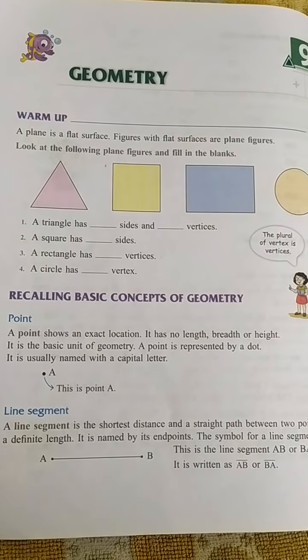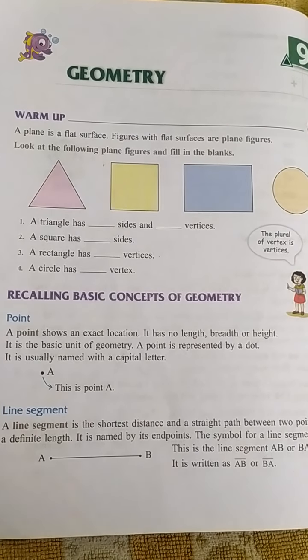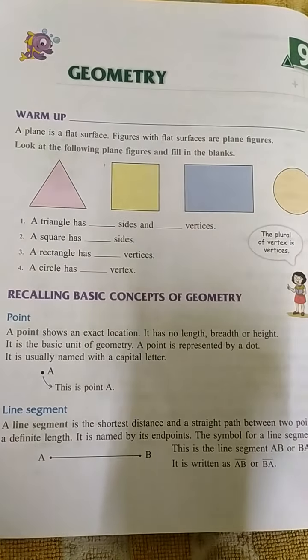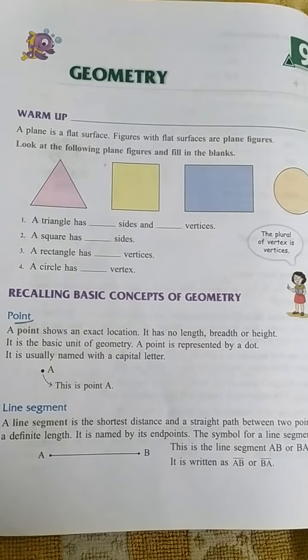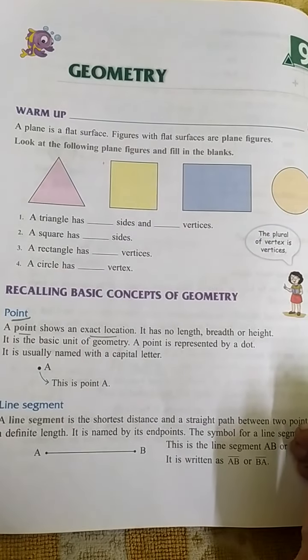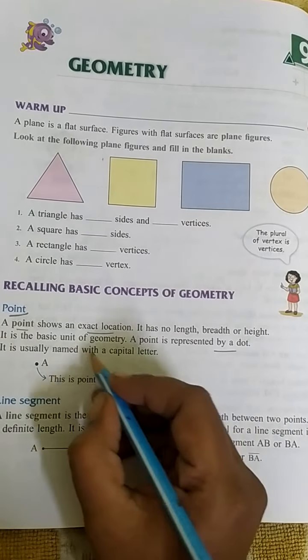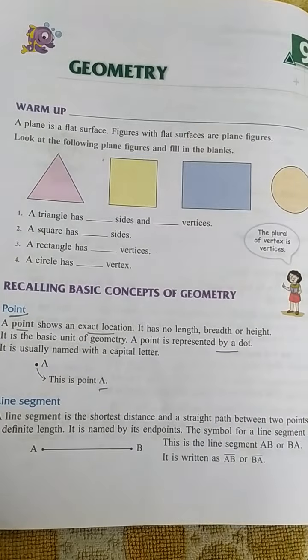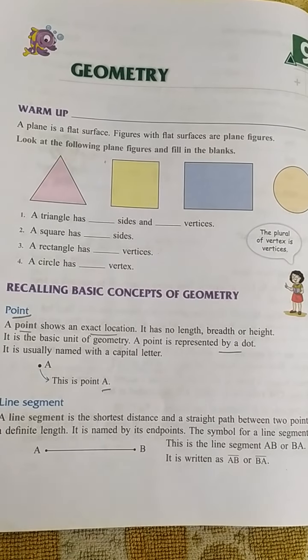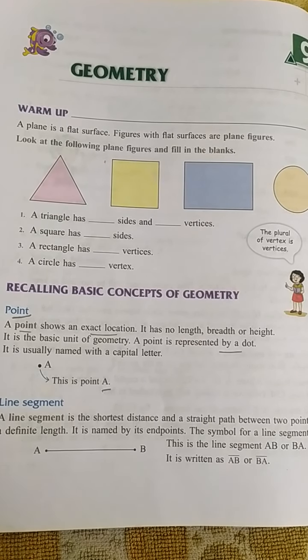Here we are going to first revise the basic concepts of geometry. First is point. A point shows an exact location and it is represented by a dot and we name it by a capital letter. So a dot shows exact location, a point.